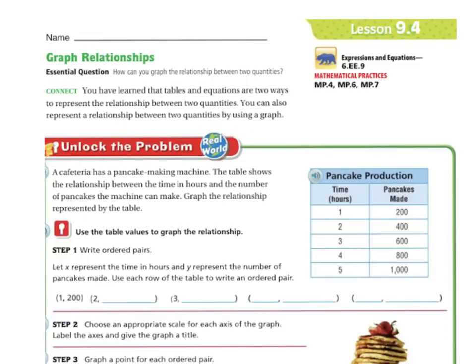Let's unlock the problem. A cafeteria has a pancake-making machine. The table shows the relationship between the time in hours and the number of pancakes the machine can make. Graph the relationship represented by the table. Use the table values to graph the relationship.